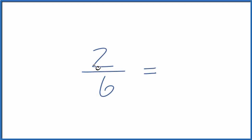Let's write some equivalent fractions for 2/6. That's 2 over 6. And basically what we're trying to do is to find a fraction that has the same value, but a different numerator and denominator.